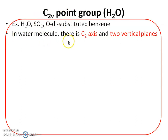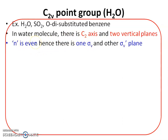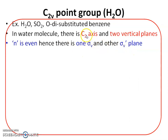In the water molecule there is a C2 principal axis and two vertical planes at right angles to each other, both passing through the C2 principal axis. Since N is even, one plane is sigma V type and the other is sigma V prime, and these two planes are at right angles to each other. With N = 2, there is one sigma V and one sigma V prime plane.